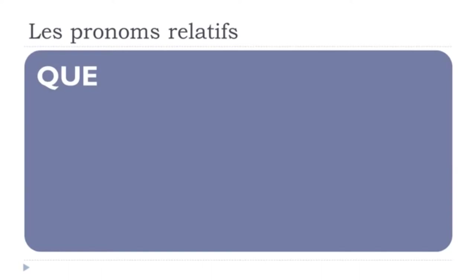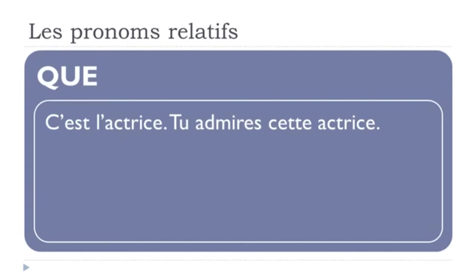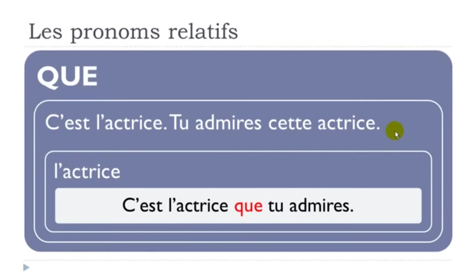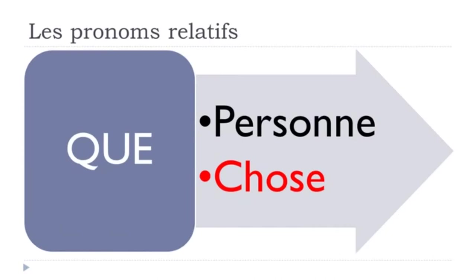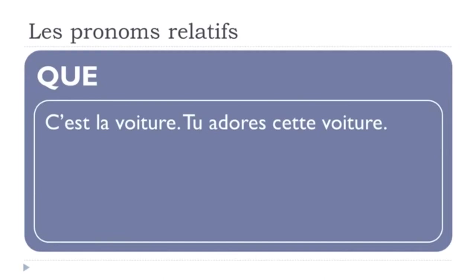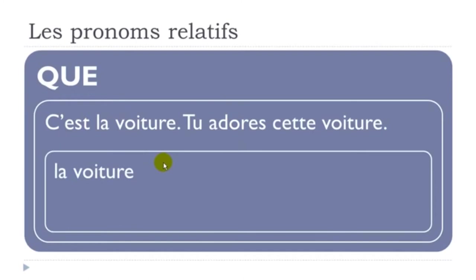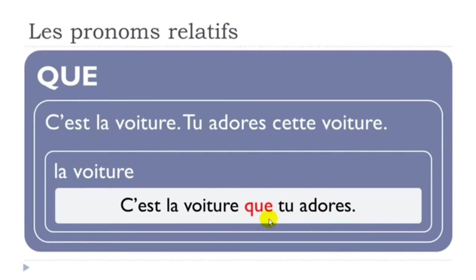The same with the feminine form: 'C'est l'actrice. Tu admires cette actrice.' → 'C'est l'actrice que tu admires.' And with a thing: 'C'est la voiture. Tu admires cette voiture.' → 'C'est la voiture que tu admires.' Same concept, same structure — put 'que', then subject, then verb.